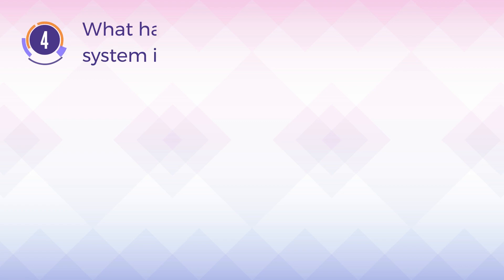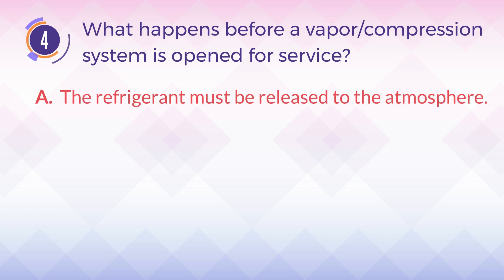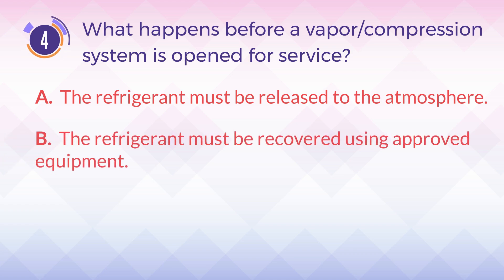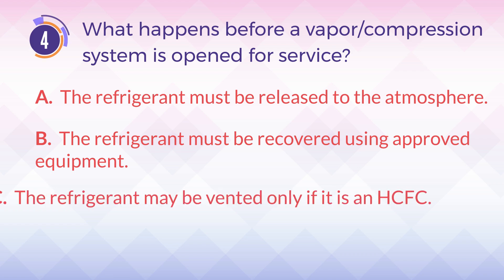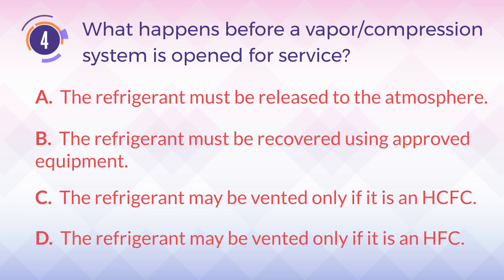Number 4. What happens before a vapor or compression system is open for service? A. The refrigerant must be released to the atmosphere. B. The refrigerant must be recovered using approved equipment. C. The refrigerant may be vented only if it is a HCFC. D. The refrigerant may be vented only if it is an HFC.